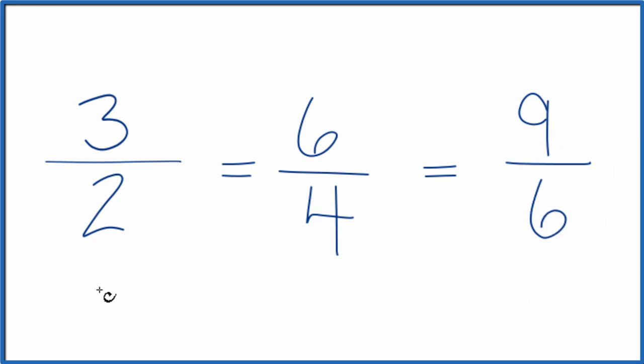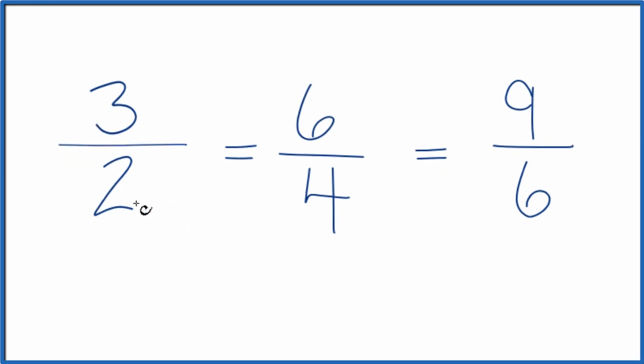When we look at 3 over 2, this is an improper fraction. 3, the numerator, is larger than 2, the denominator.